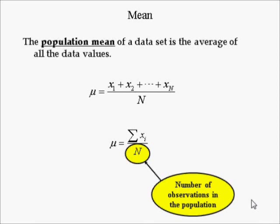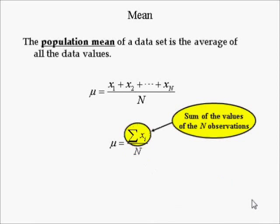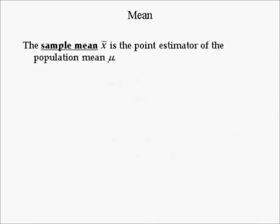We use big N for the population because we use little n for the size of the sample, since the sample is a subset of the population being studied. Big sigma written next to X_i means we sum up the N observations of variable X. The sample mean of a data set is the average of the data values in a sample drawn from the population being studied.